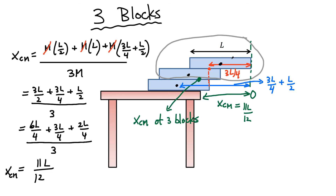So with one block we had L/2, with two blocks 3L/4, and now with three blocks we're at 11L/12. Let's have a look at the four block case.